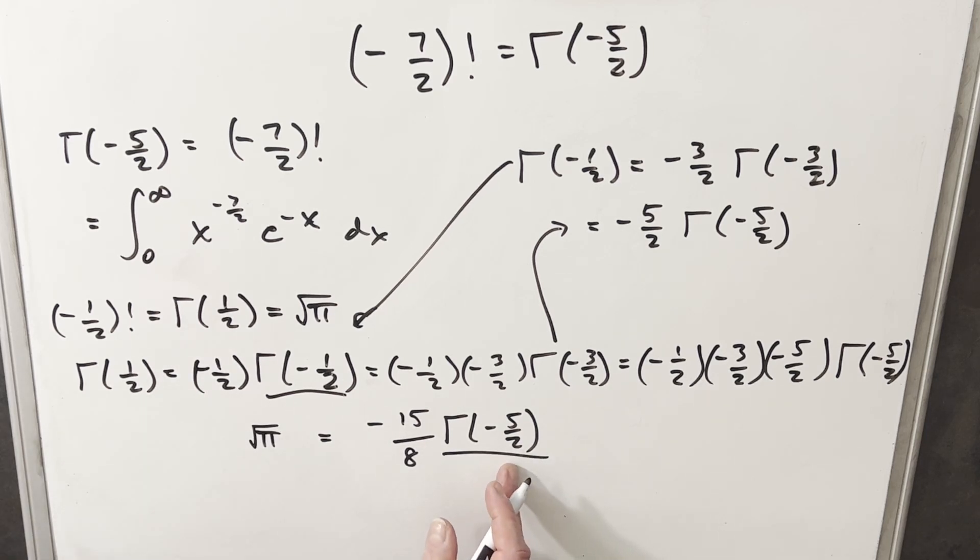So we have this set up just as an algebra problem where we can solve for what we want. We can try to find this. So what I'm going to do is I want to get rid of this minus 15 eighths. I'm just going to multiply here by minus eight over 15 on both sides.